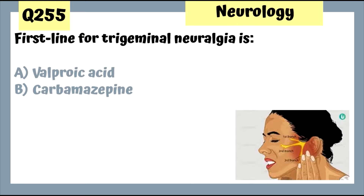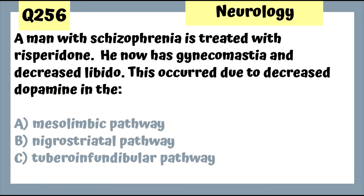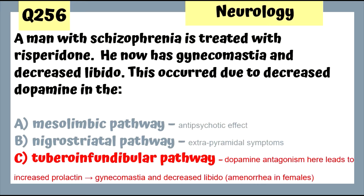Question 255: First-line for trigeminal neuralgia is carbamazepine or oxcarbazepine. Question 256: A man with schizophrenia treated with risperidone now has gynecomastia and decreased libido — this occurred due to decreased dopamine in the tuberoinfundibular pathway. Dopamine antagonism here leads to increased prolactin, causing gynecomastia, decreased libido, and amenorrhea in females.